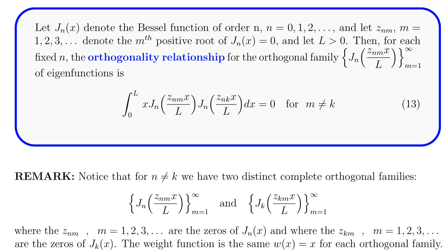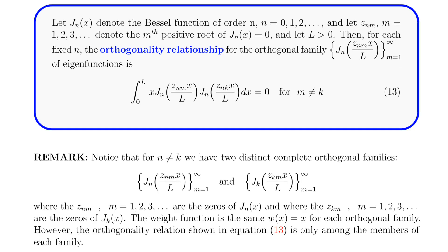One built out of the Bessel function j sub n, and the other one built out of the Bessel function j sub k. The weight function for each of these orthogonal families is w of x equals x. However, it's important to keep in mind that the orthogonality relation shown in equation 13 is only among the members of each individual complete orthogonal family.